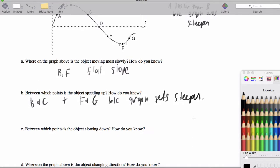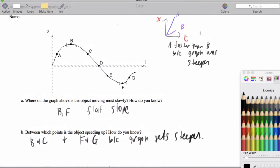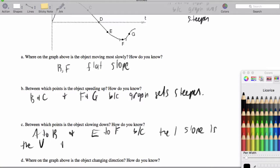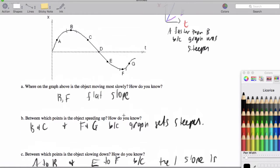All right, now between which points is the object slowing down? Again, flat means slower, so we're looking for where it levels off. So from A to B and from E to F, because the slope is the velocity, and from A to B and E to F the slope gets flatter and so V is slower. Now where are we changing direction?